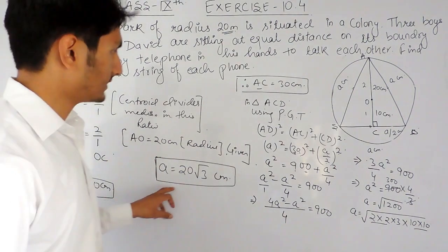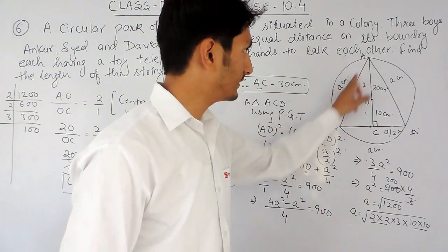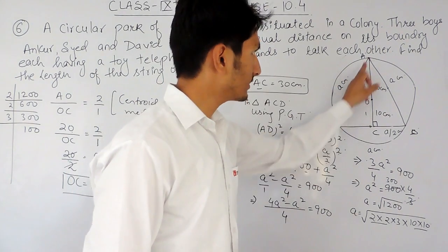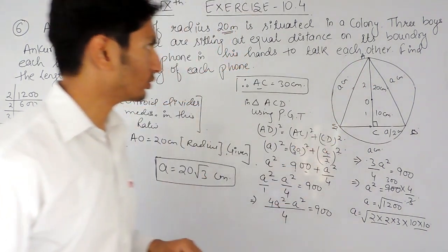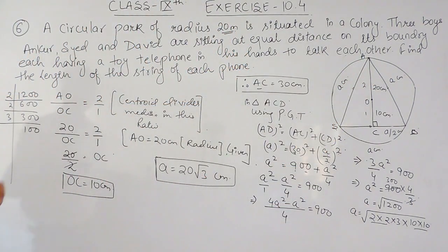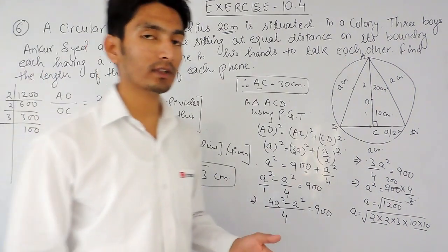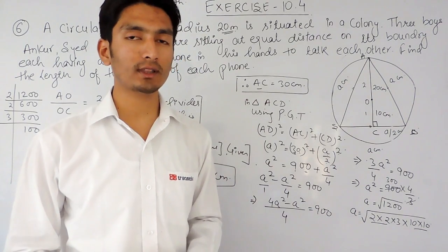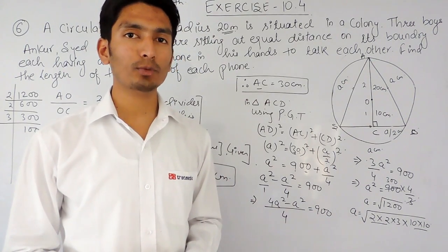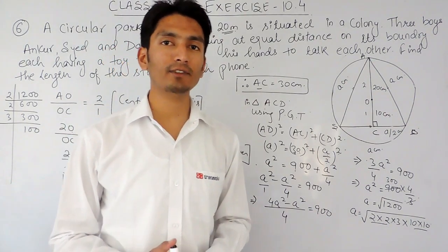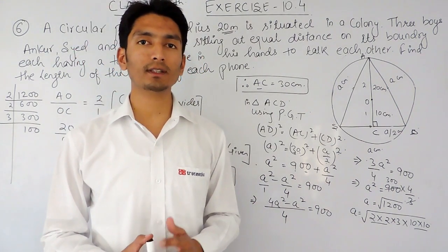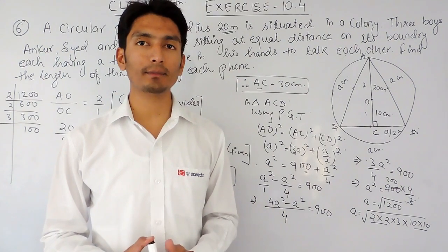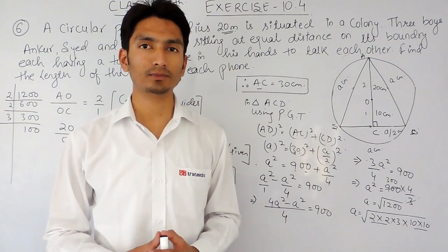So this is the value of the side — that is, the length of the string from A to S, or from Ankur to Syed — which is 20√3 centimeters. This is how you can solve this particular question. I hope you have understood. If you like this video, please subscribe to our channel. If you have any problem in math, you can directly contact us — the phone number, email address, and WhatsApp number are given below in the description. Thank you.